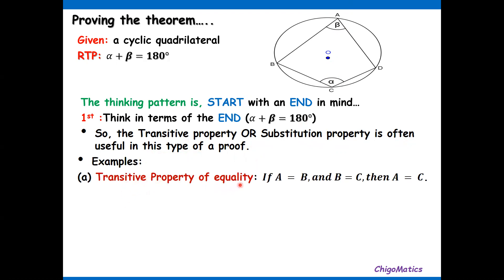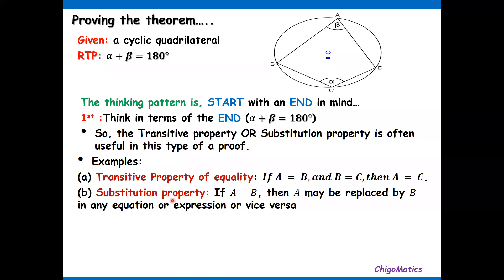Transitive property of equality: If A equals B and B equals C, then A equals C. You see that B is related to A, the same B is related to C, therefore A is related to C. Substitution property: If A equals B, then A may be replaced by B in any equation or expression or vice versa.